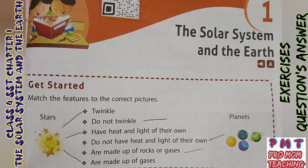Hello students, today we are going to complete Class 4 Social Studies Chapter 1, The Solar System and the Earth — Exercises and Questions-Answers. Let's start.